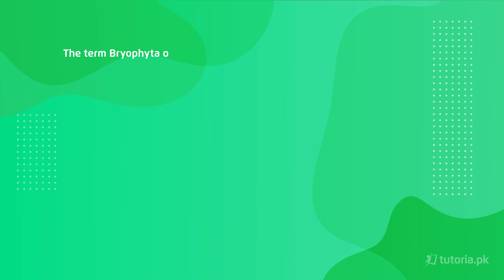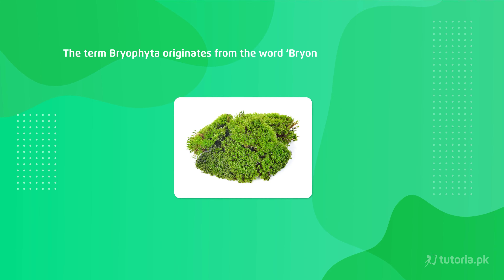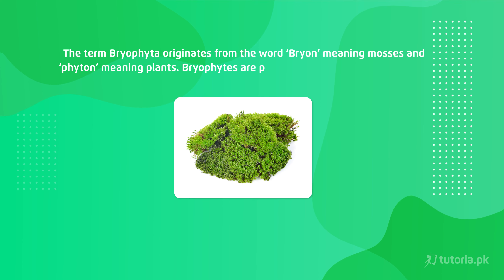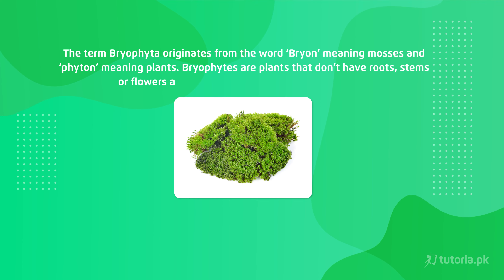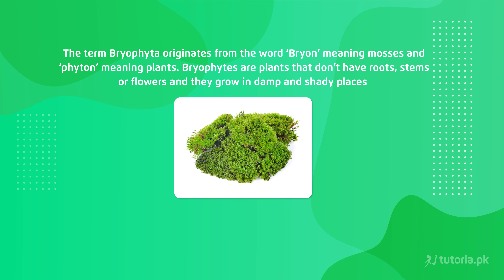The term bryophyta originated from the word 'bryon,' meaning mosses, and 'phyton,' meaning plants. Bryophytes are those plants that have root-like, stem-like, and leaf-like structures but don't grow tall. They grow close to the ground in the same place. This is why we call them the amphibians of the plant kingdom.